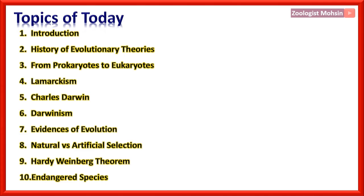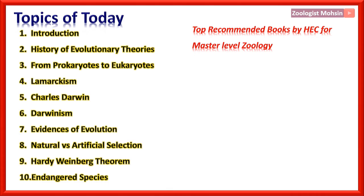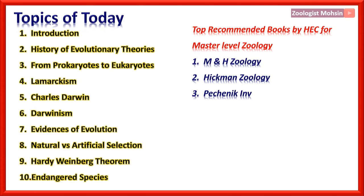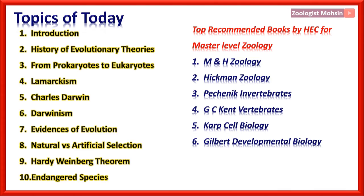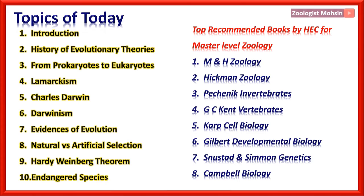Here are some top recommended books by HEC for master level zoology: Miller and Harley zoology, Hickman zoology, Pachanik invertebrates, G.C. Kent vertebrates, Carp cell biology, Gilbert developmental biology, Sandsted and Simon genetics, and Campbell biology. These are the most favored eight books for zoology being taught in different universities.